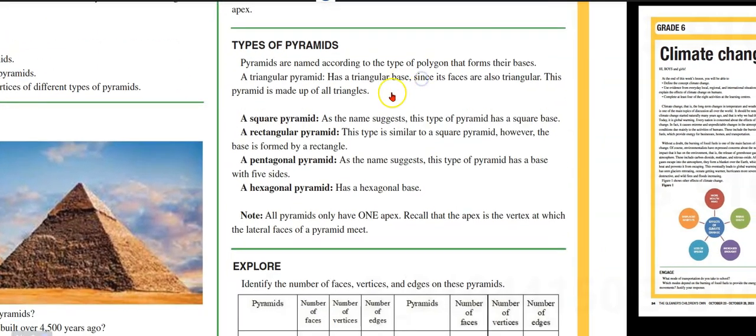Types of pyramids. Pyramids are named according to the type of polygon that forms their bases. A triangular pyramid has a triangular base. Since its faces are also triangular, this pyramid is made up of all triangles.